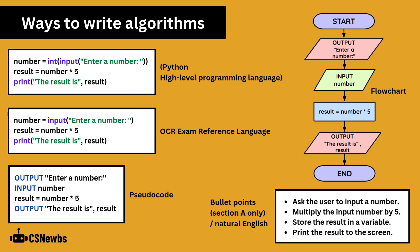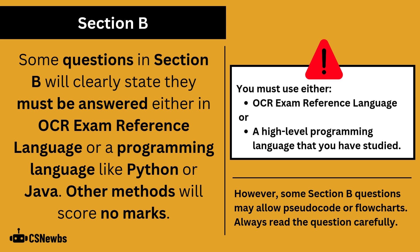Remember to read the wording of the question very carefully. If in doubt, program code like Python should be accepted for every type of algorithm question, including if it asks for pseudocode. Some questions in Section B will clearly state they must be answered either in OCR exam reference language or a programming language like Python or Java — other methods will score no marks. However, some Section B questions may allow pseudocode or flowcharts, so it's very important you always read the question carefully.